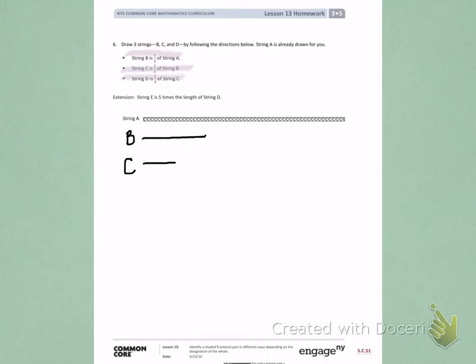String D is one-third of string C. So again, we're going to pay attention to string C, and we're going to try and draw a line that is one-third of string C. So it's going to be a very tiny little line. We want it to be about one-third of string C.